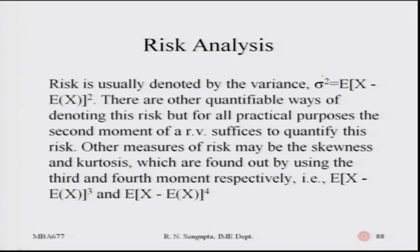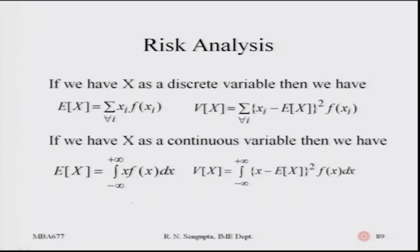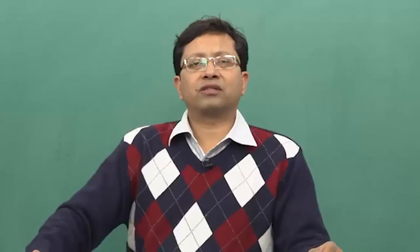The formulas for skewness use E[X cubed] and E[X to the fourth power], and so on. But we will only concentrate on the risk concept, which is the second moment. If X is a discrete variable, the expected value is found by summation of X_i multiplied by the corresponding probabilities, then summed up — the realized values multiplied by their probabilities.